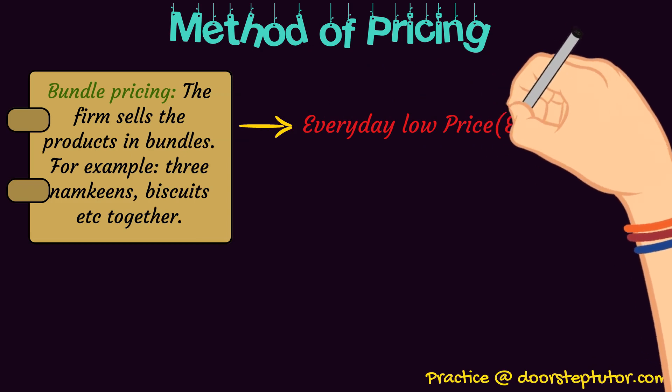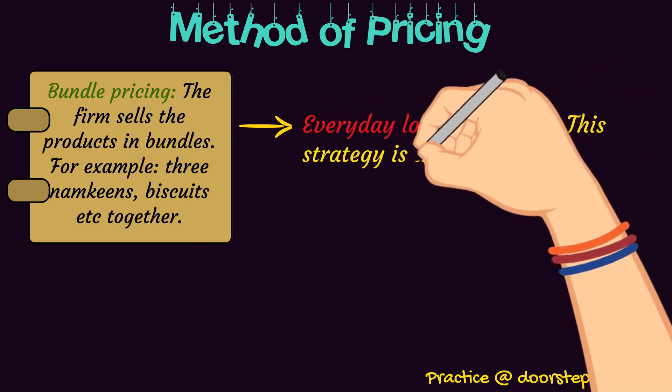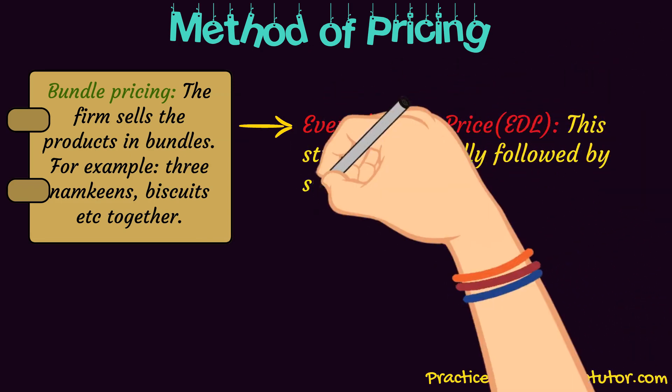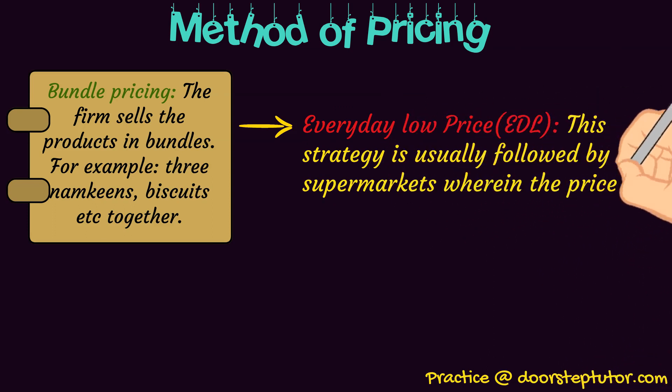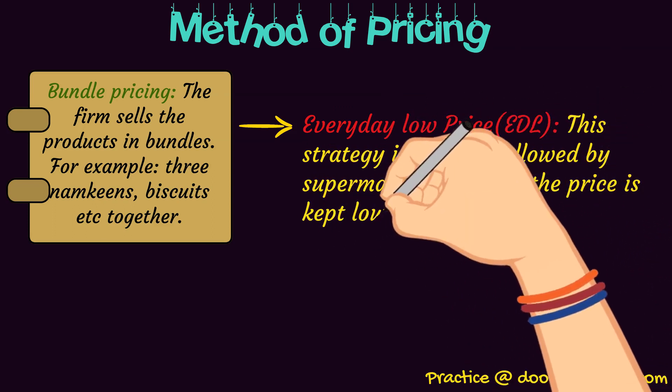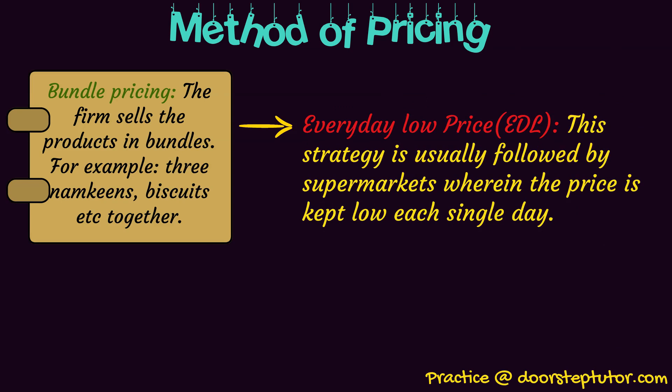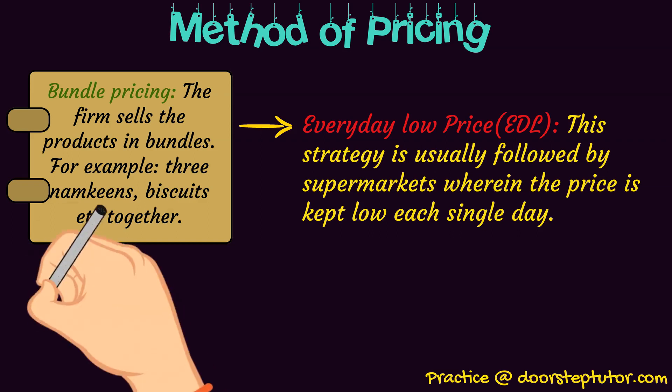Then, everyday low price. This strategy is basically followed by supermarkets, wherein the price is kept low every single day. The best example of this is Walmart. The EDL strategy is basically followed by giant supermarkets, where every day we get low prices.